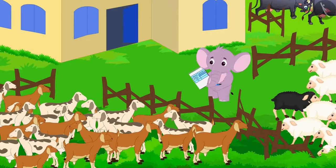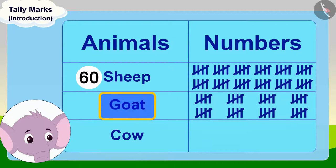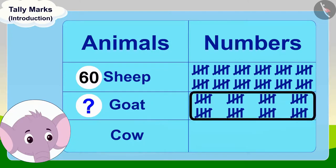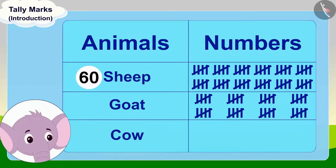Appu then started counting his goats and drew tally marks for them in his table. Can you tell how many goats Appu has in total? You can stop the video and find the answer. That's right — Appu has 40 goats.